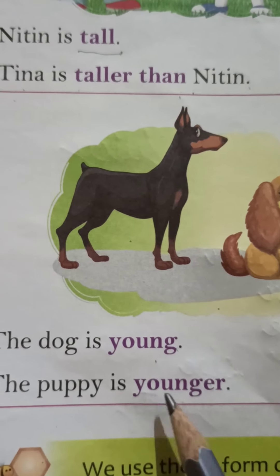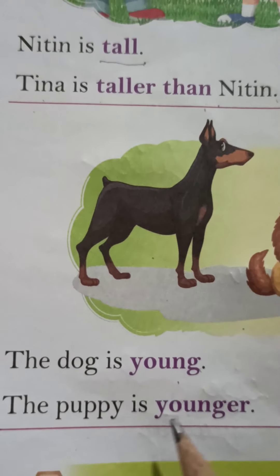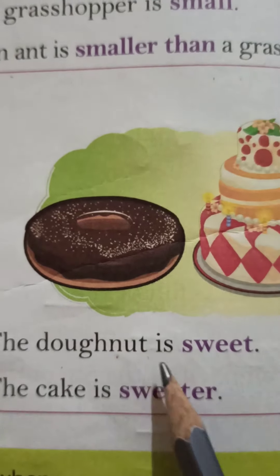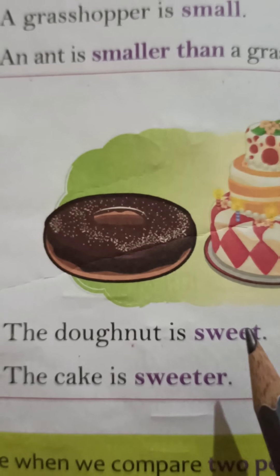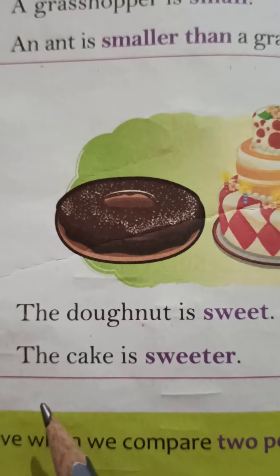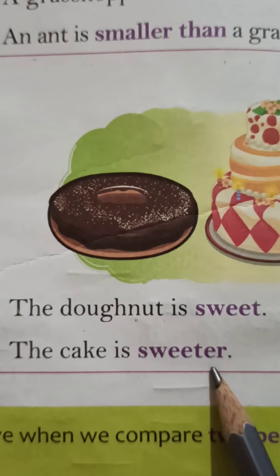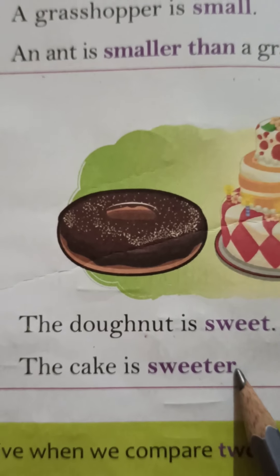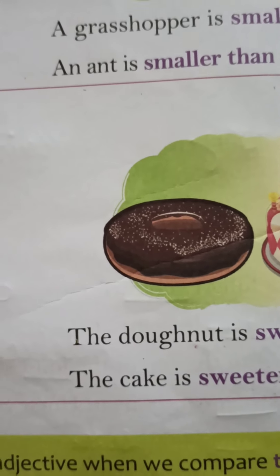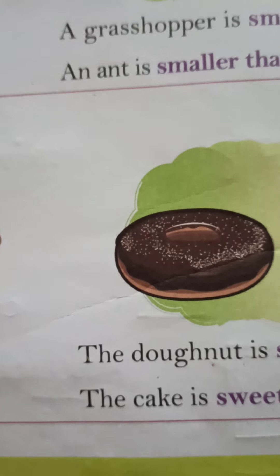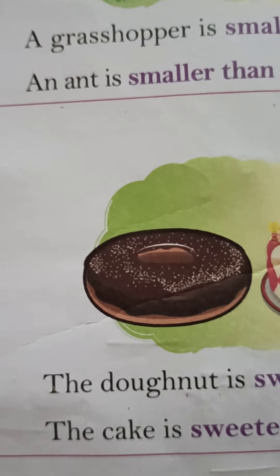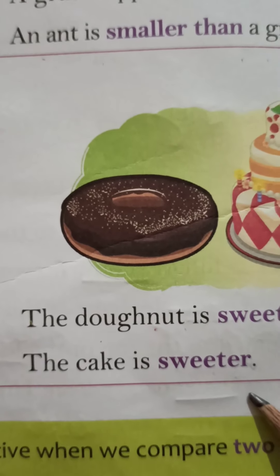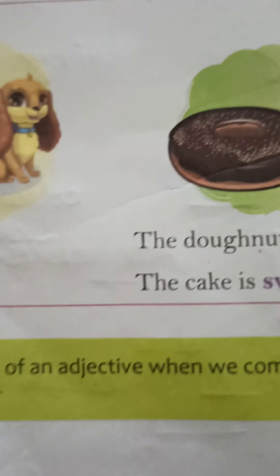The dog is young. The puppy is younger — उससे भी younger. The donut is sweet, और cake और भी sweeter होता है. हमने दो दो चीजों को compare किया है — कि कौन लंबा है, कौन उससे भी लंबा है, कौन sweet है, कौन सी चीज़ उससे भी ज़्यादा sweeter है.